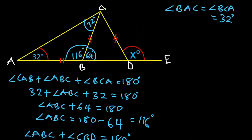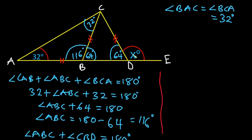Triangle BCD is also an isosceles triangle with two sides equal and two angles equal. So the base angles of triangle BCD are both 64 degrees.